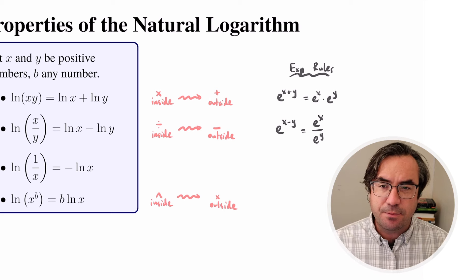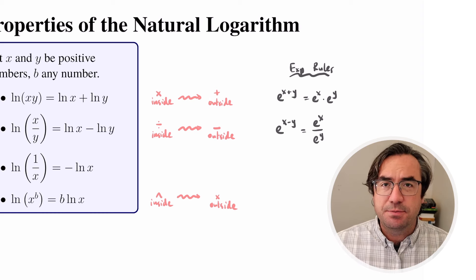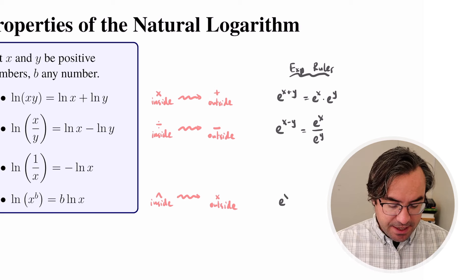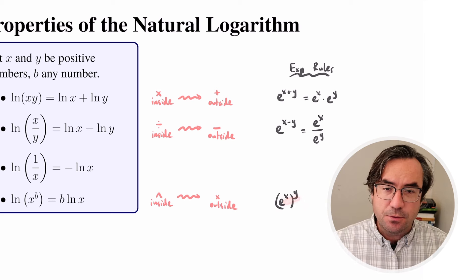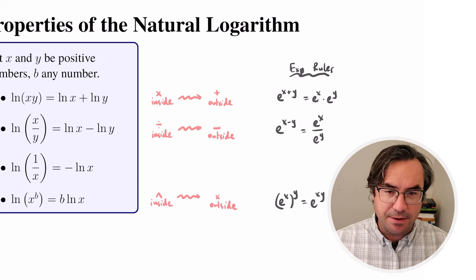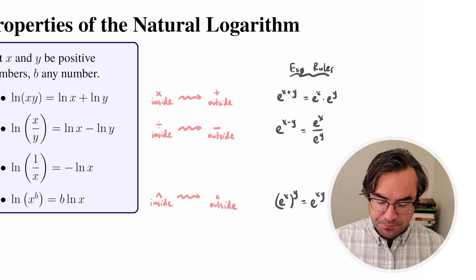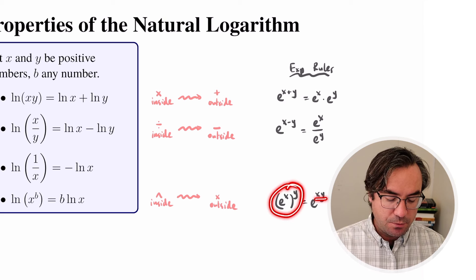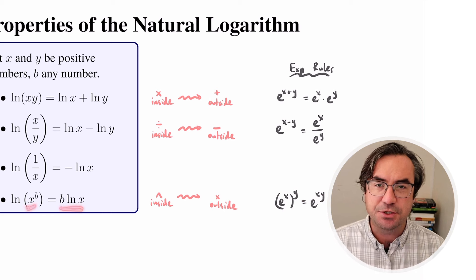Our other exponent property matches up with the last log property and involves multiple exponents. If we have e raised to the x, and then that whole thing raised to the power y, we just multiply the exponents and end up with e raised to x times y. So multiple exponents means we multiply — and that's what we see in the log property as well.